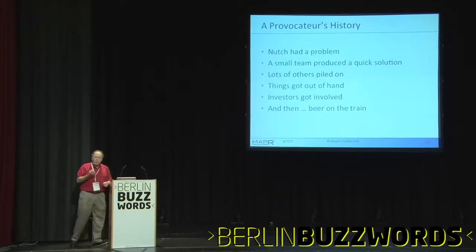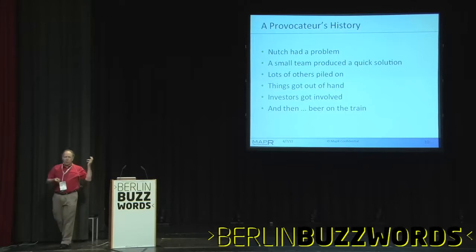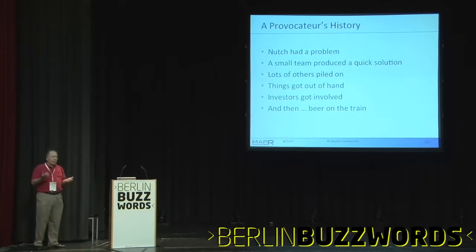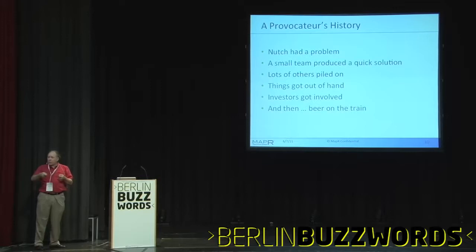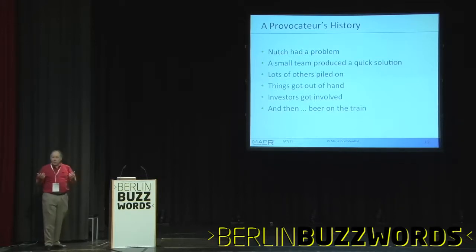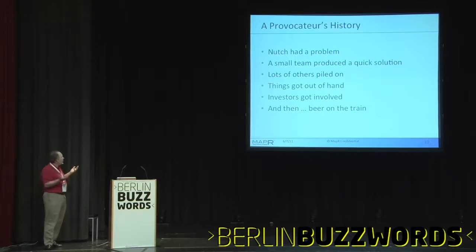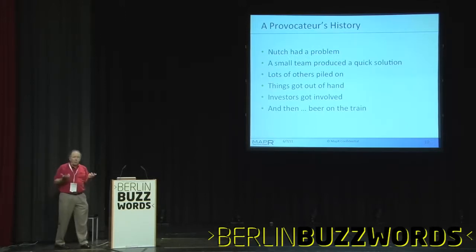But there are other problems that are much harder. Here's a provocateur's description of history: someone had a problem, a small team produced a quick solution, lots of other people started doing evolutionary changes, and things got out of hand. People started writing checks and scaling their activity — we write code, they write checks, we all understand what we each do. But then a situation I call 'beer on the train' happened.